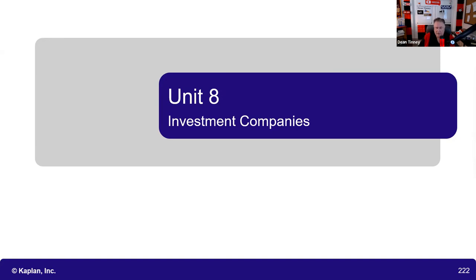There are people called control persons, and all the stock they own is called control stock. For example, Elon asked Larry Ellison to join the board of Tesla. Larry bought 5 million shares in the public marketplace — that stock is not restricted. He also received 1 million shares directly from Tesla for serving on the board. Regardless of how a control person acquires stock, all of it — owned by officers, directors, and principal stockholders — is called control stock.